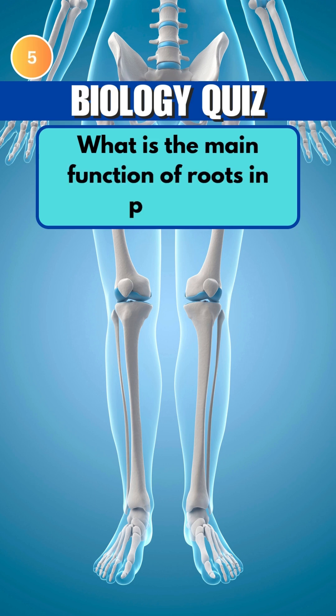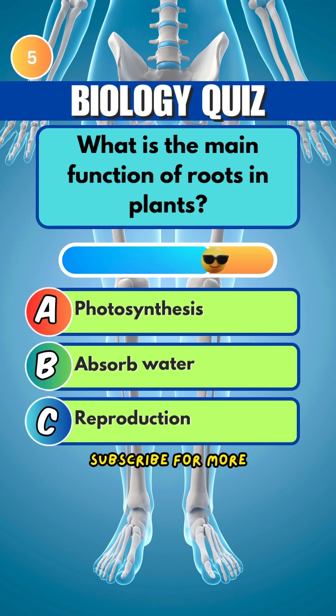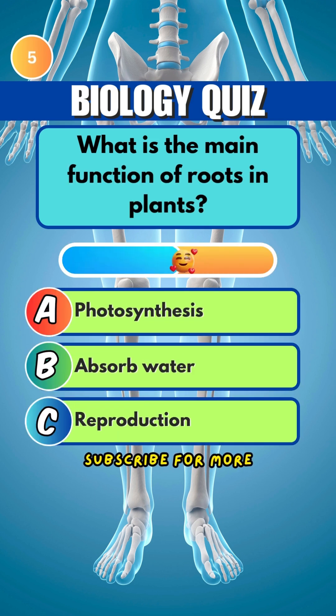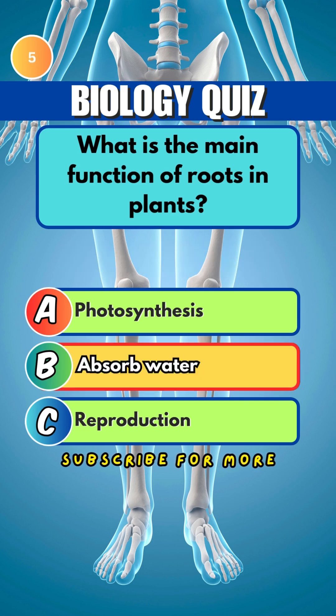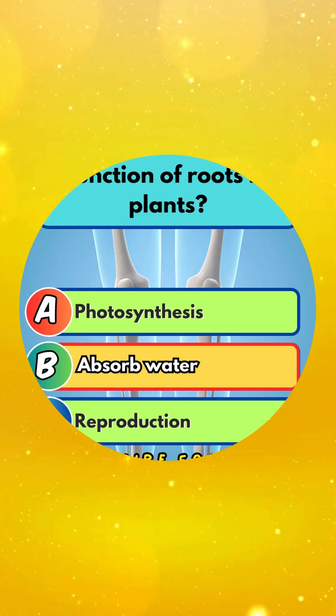What is the main function of roots in plants? Answer: B. Absorb water.